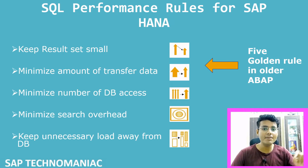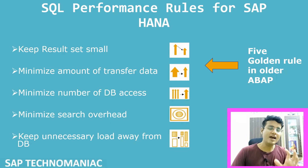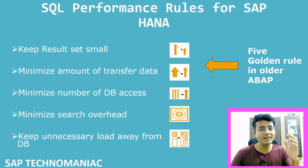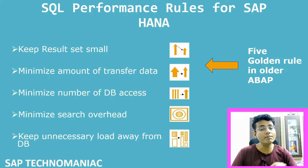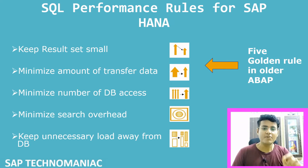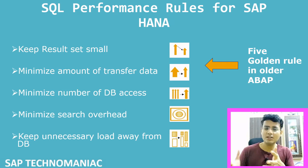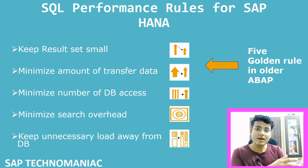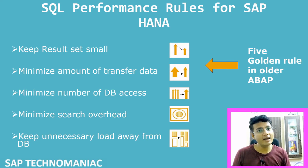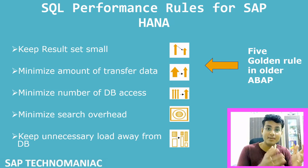Instead of hitting the database multiple times, use it once. If you need data from more than one table, combine them and hit the database together. You should not hit the same database table multiple times because the database has to process and optimize each query, and the network also has to carry the same data again and again — both causing unnecessary overhead.